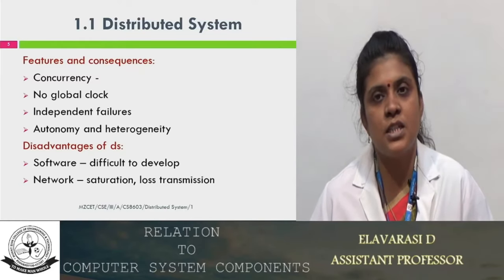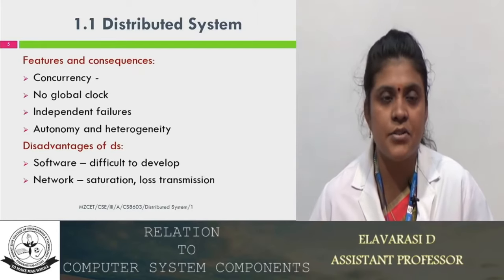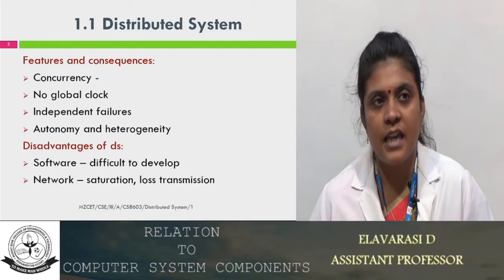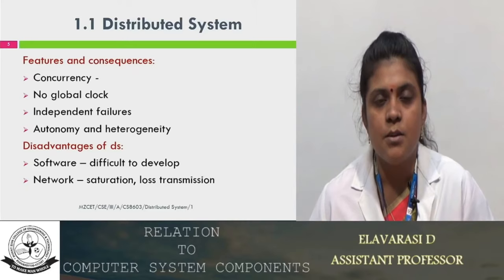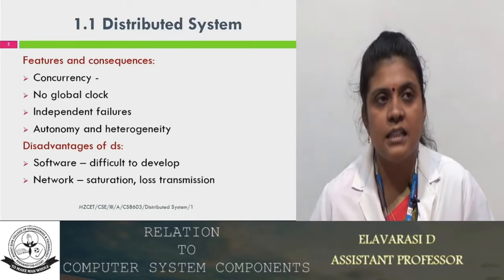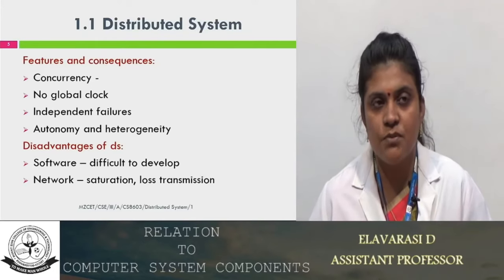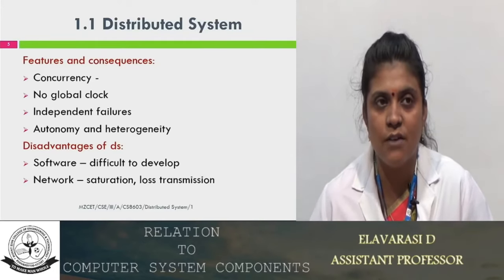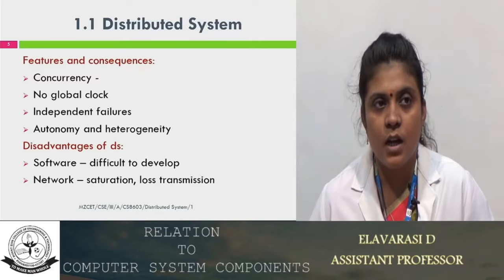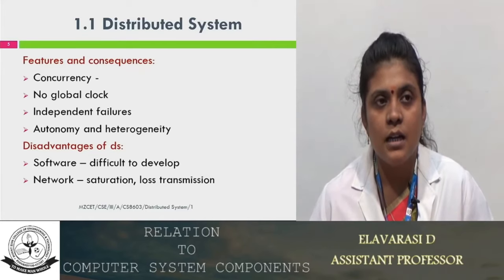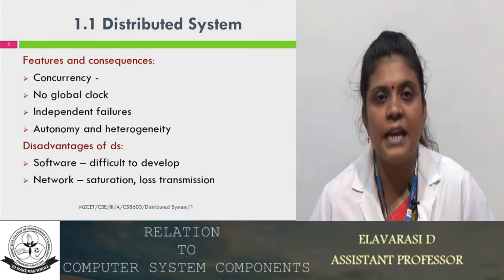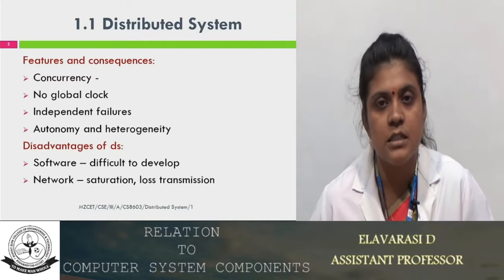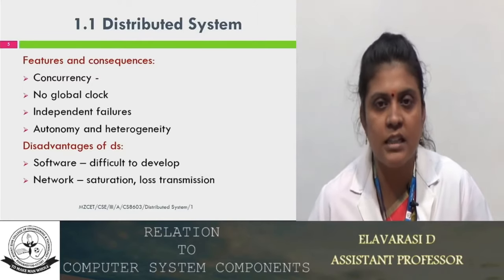The next two features and consequences in a distributed system are: concurrency — at a time it is able to execute multiple processes; no global clock — we have already discussed this; and the third one is independent failures. From the word 'autonomy' we can identify that every processor is an independent system, and if one system in the distributed system fails, it will not affect the entire system.